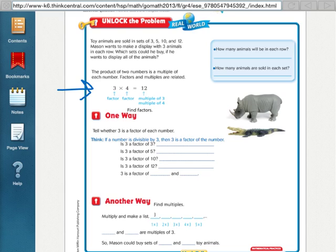It basically tells us that the factors in a multiplication sentence, so the factors will be 3 and 4, are multiples of, or the product is multiples of the factors.